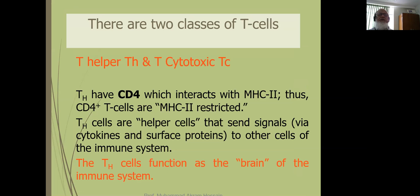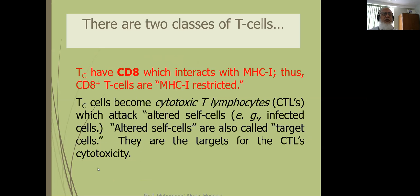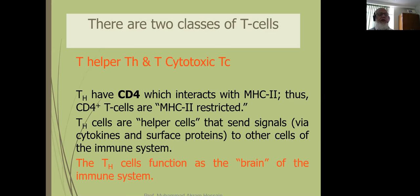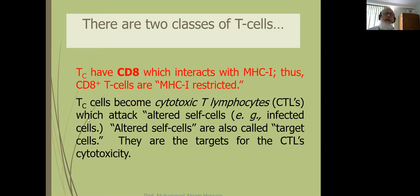There are two classes of T cells: T helper and cytotoxic T cells. T helper cells are CD4 and cytotoxic T cells are CD8. T helper cells interact with MHC class 2 — thus CD4 T cells are MHC2-restricted. Cytotoxic T cells (CD8 cells) interact with MHC class 1 — thus CD8 cells are MHC1-restricted. A useful memory rule: 2+2=4 for CD4 with MHC2, and 1+1 makes 8 for CD8 with MHC1.